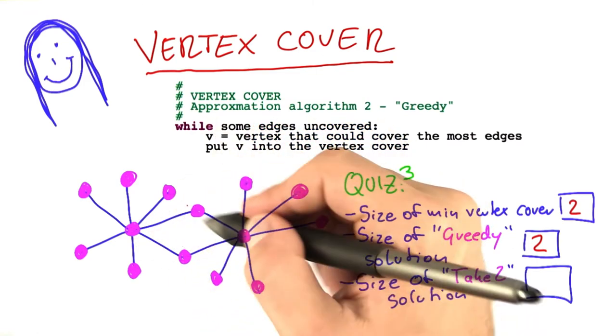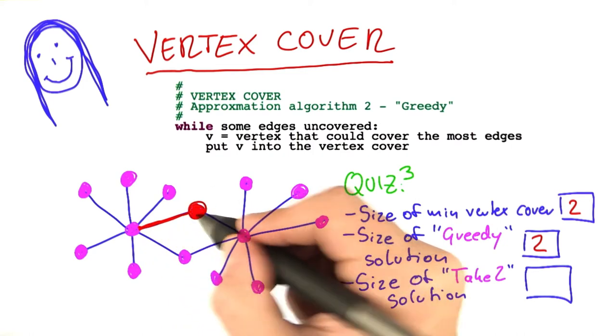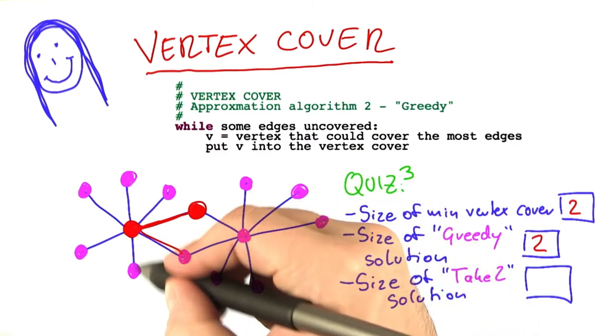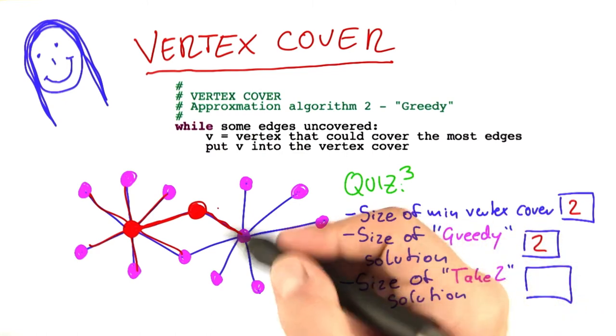Because what would it do? It takes any uncovered edge, doesn't really matter which one. So let's say it takes this one here, then it will put this vertex here into the solution set, and this vertex here. So all of those edges here are covered, and that one here as well.